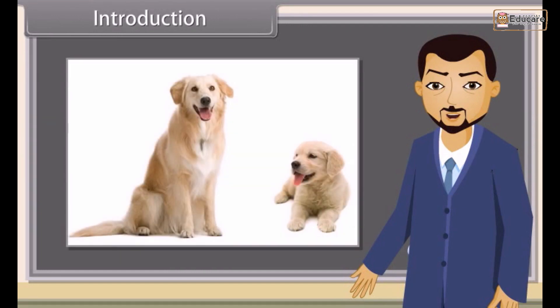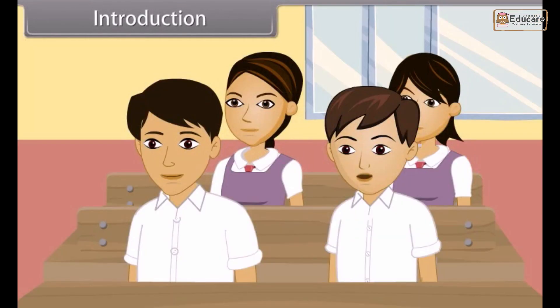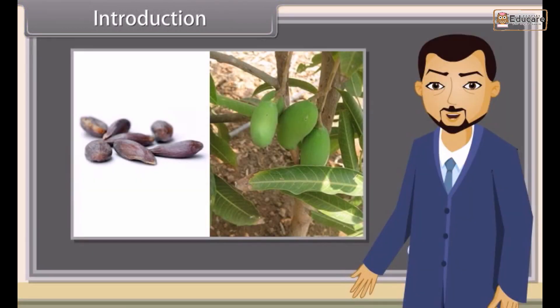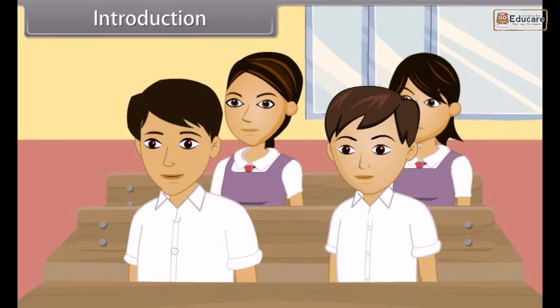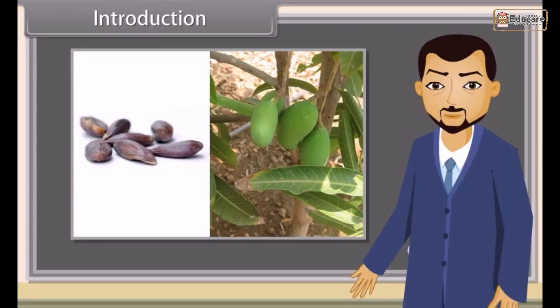Introduction. What can you see in this picture? We can see a dog and its puppy. Correct. Can the seeds in this picture produce the corresponding mango plant? No. Mango plant can only be produced from mango tree. You're right.